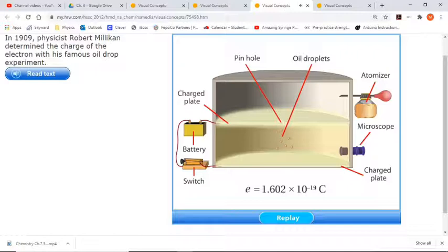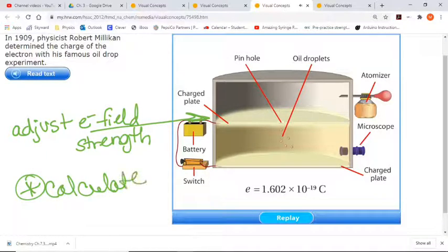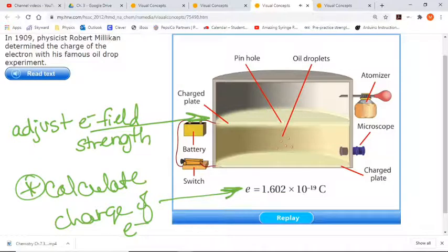A couple pointers. He was able to determine the charge of the electron. The oil droplets were going through these charged plates. You can see the battery that's hooked to it charged the plates. He fine-tuned it and was able to adjust the electric field strength on those plates, and from that he could actually calculate the charge of an electron. There's the value. That capital C is coulombs, the charge of an electron.